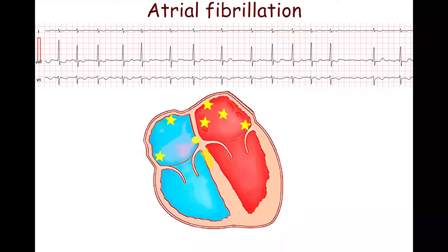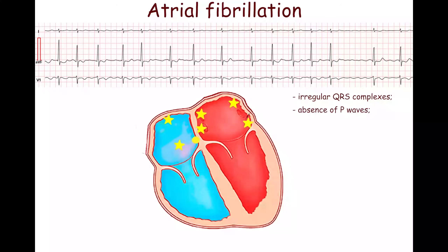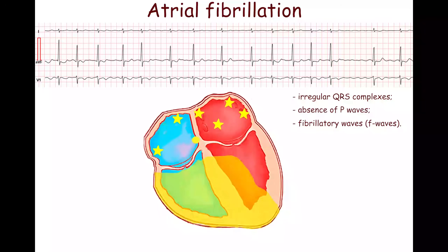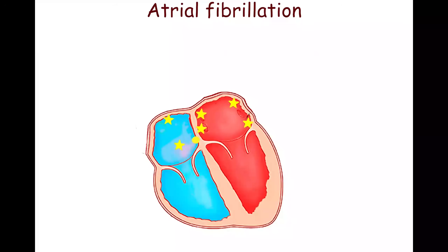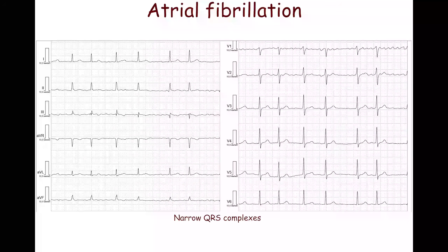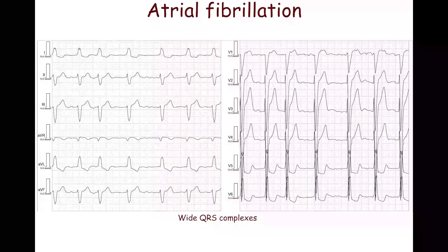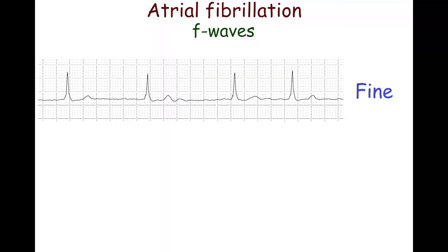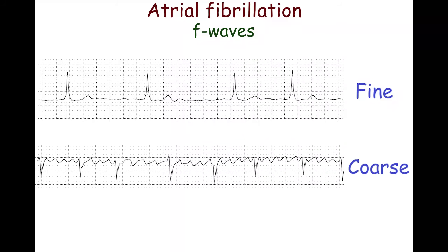ECG features of atrial fibrillation include irregular rhythm, absence of P waves, variable ventricular rate, and fibrillatory waves. QRS complexes are narrow in the absence of bundle branch block. Fibrillatory waves may be either fine, when their amplitude is less than 0.5 mm, or coarse, when their amplitude is more than 0.5 mm.